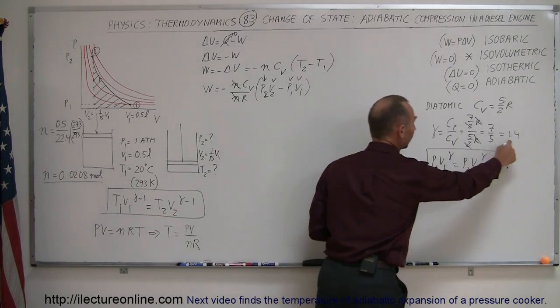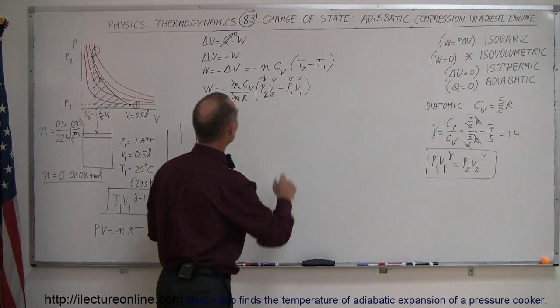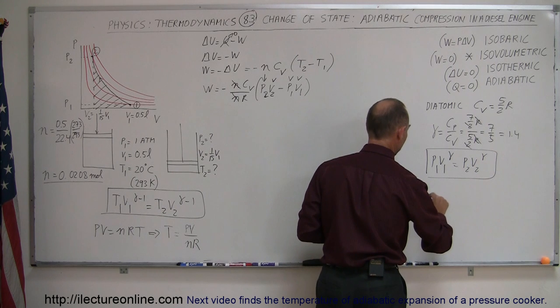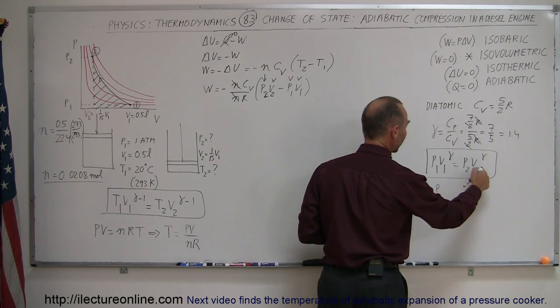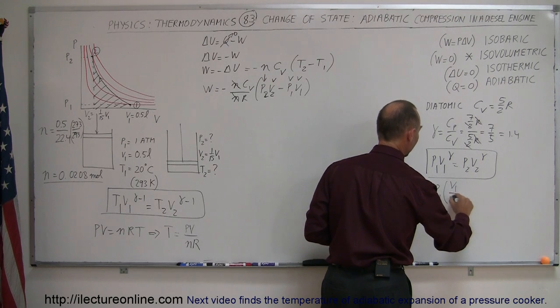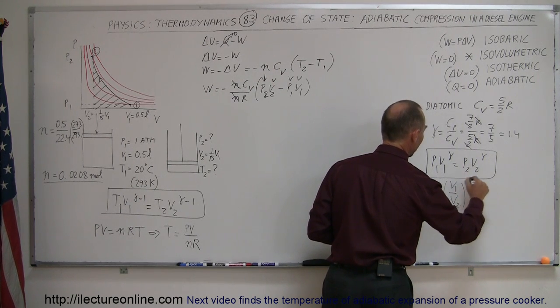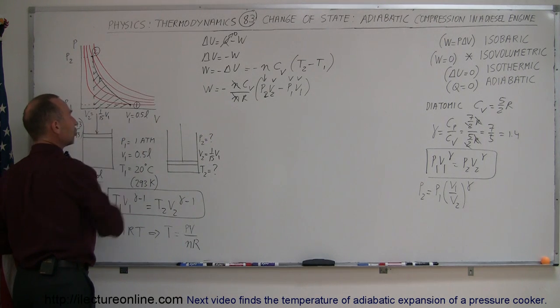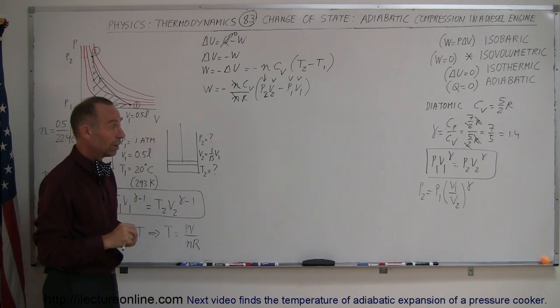Gamma, of course, still is 1.4 and now we're solving for P2. When we do that we get P2 equals P1. We divide both sides by V2^gamma, so we end up with V1 over V2 to the gamma power. Remember that V1 is 15 times as big as V2, so that ratio is 15 to 1.